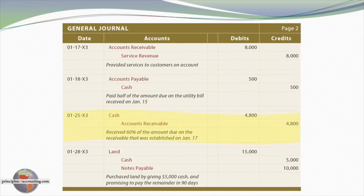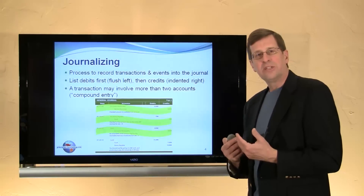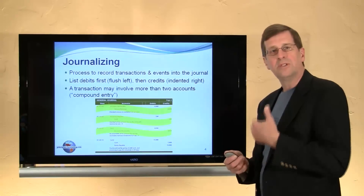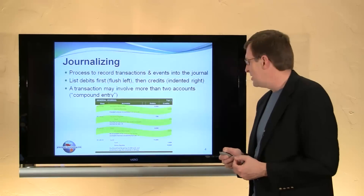In the next transaction, we're collecting $4,800 on an outstanding accounts receivable. Cash is being boosted by this transaction — cash going up, being an asset, it's debited. Accounts receivable is now decreasing since we're collecting it; they no longer owe us the money. Accounts receivable is an asset that's decreasing, and assets are decreased with credits. This illustrates the importance of memorizing the debit credit rules — it makes the study of accounting far more efficient.